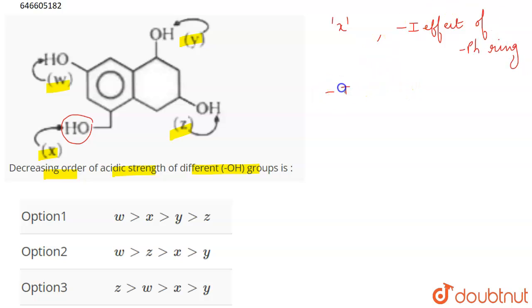And if you talk about the minus I effect that is proportional to the stability of the anion. More is the minus I effect, more is the stability of the anion, and therefore more is the acidic strength. So more is the electron withdrawing effect, more is going to be the acidic strength. And at X, there is a minus I effect of the phenyl ring.